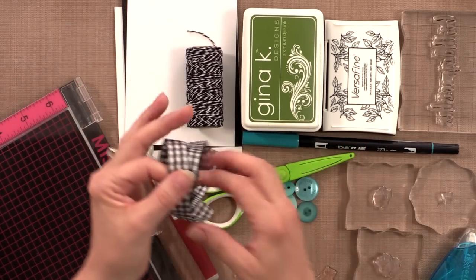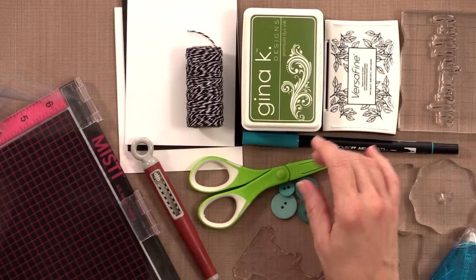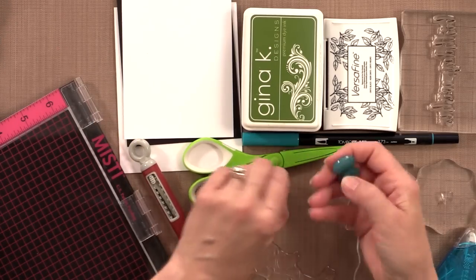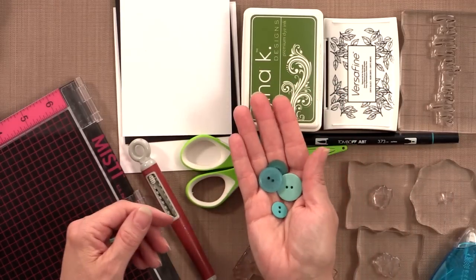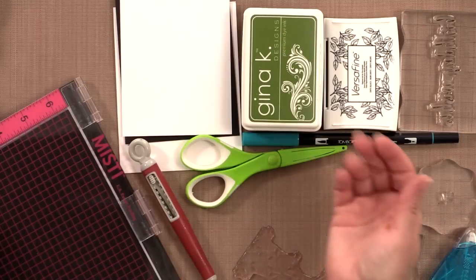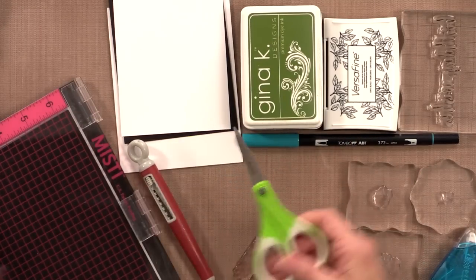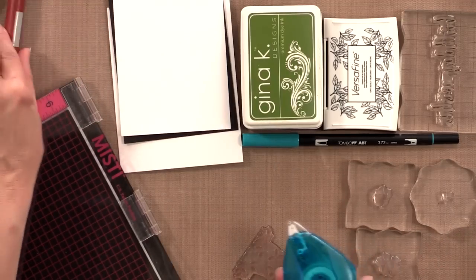I'm also going to use some ribbon that I found in my stash. This is some black gingham ribbon. I'm going to use a little bit of black twine and a couple buttons. I'm not sure which one I want to use yet so I picked a few out of my stash. These are turquoise buttons. Then I've got some scissors here to use. I've got a craft pick and I have some adhesive.